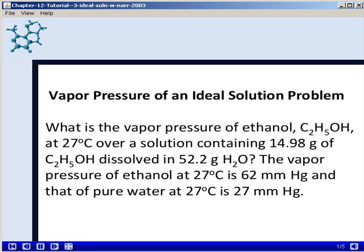This problem will focus on the vapor pressure of an ideal solution. We want to calculate the vapor pressure of ethanol, C2H5OH, at 27 degrees Celsius over a solution containing 14.98 grams of ethanol dissolved in 52.2 grams of water. The vapor pressure of pure ethanol at 27 degrees Celsius is 62 millimeters of mercury, and that of pure water at 27 degrees Celsius is 27 millimeters of mercury.